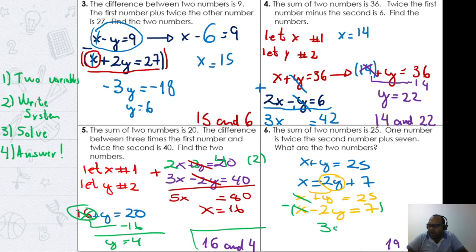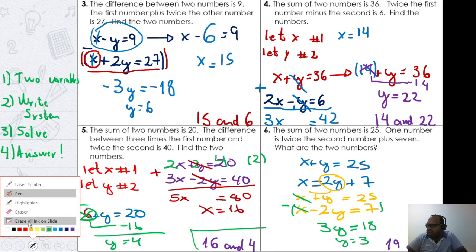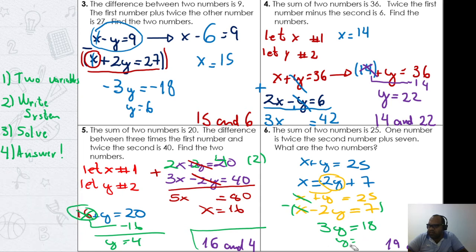X minus x, goodbye—nothing. Y minus negative 2y is positive 2y. Y plus 2y equals 3y. 25 minus 7 equals 18. How many times does 3 go into 18? Y equals 6.